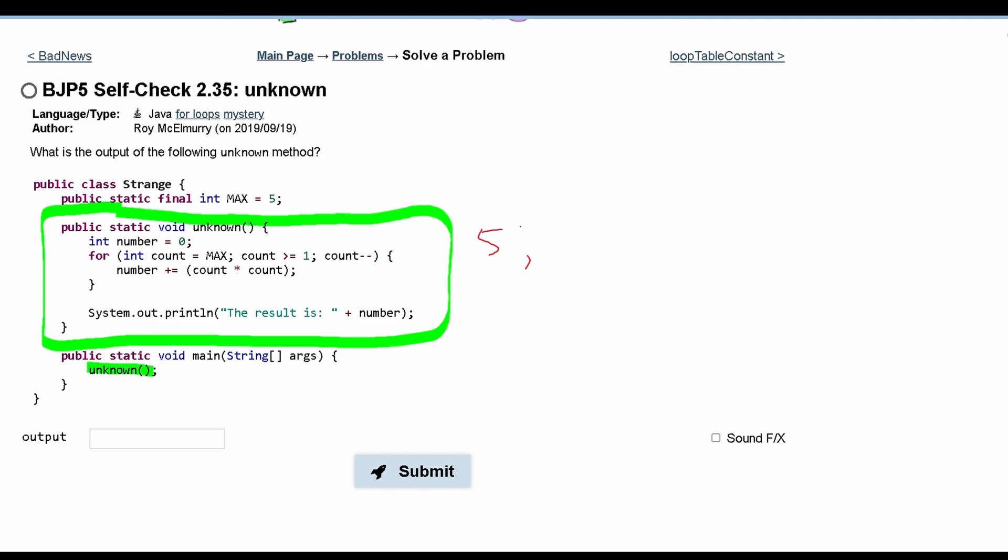So this is going to run 5 times because it's going to go from 5 to 4 to 3 to 2 to 1. So our for loop, inside of our for loop,